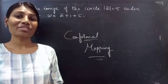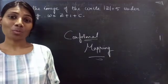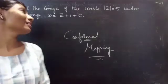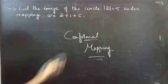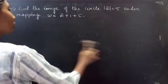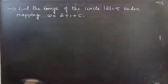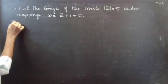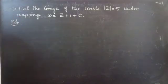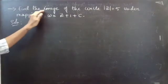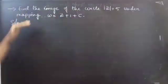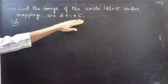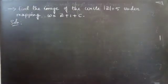Hello everyone, this is Jekalpna here. In this video we are going to see a problem from conformal mapping. We are going to find the image in the omega plane. The image of the circle |z| equals 5 under the mapping omega equals z plus 1 plus c.